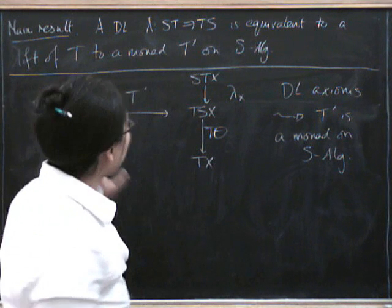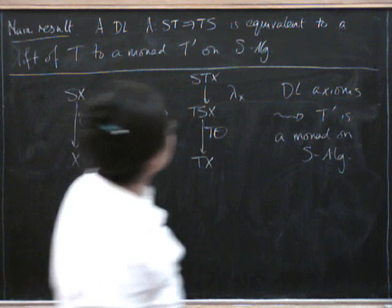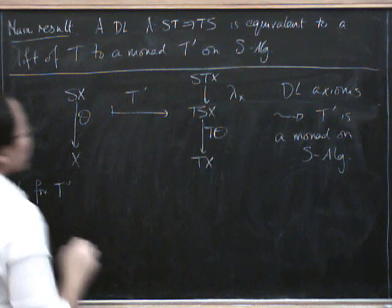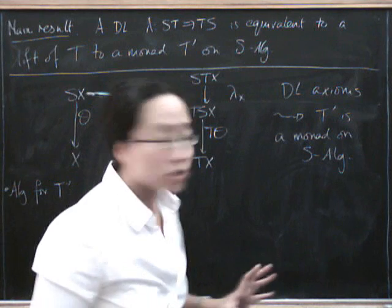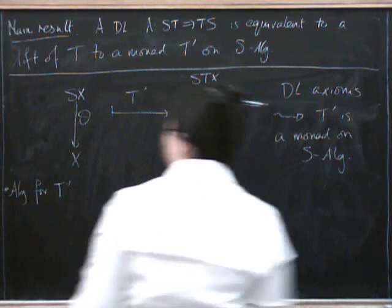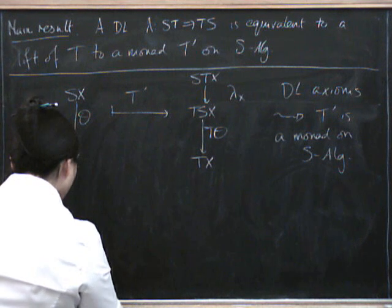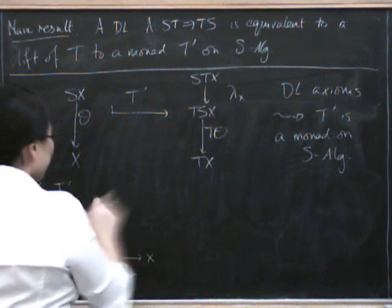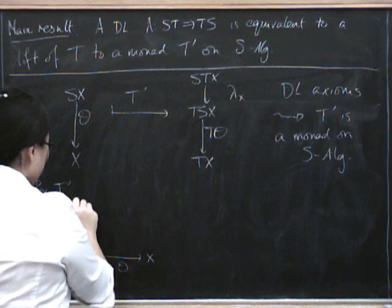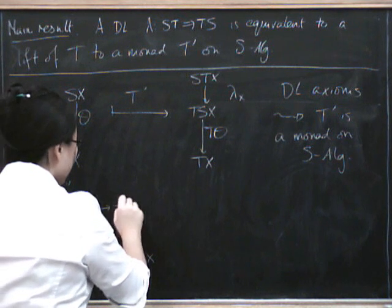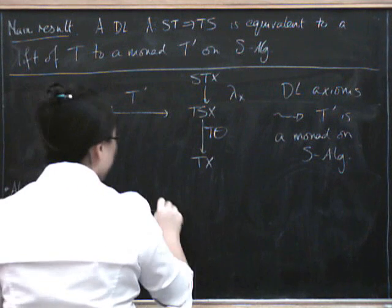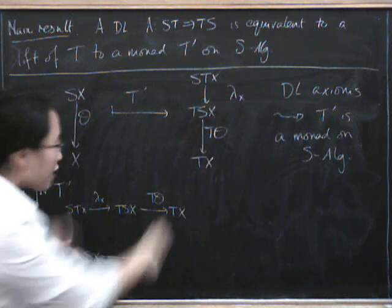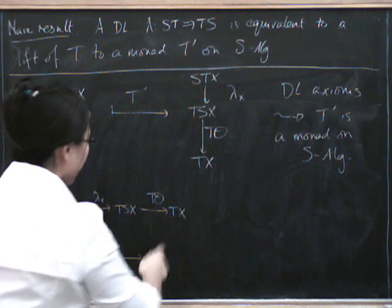Now what about this business of the algebras for T-prime being the same as the algebras for T∘S? So what's an algebra for T-prime? Well, the underlying object here is going to be an S-algebra, because T-prime is a monad on S-algebras. So here's an underlying S-algebra for us, S∘X going to X, right? And here's our T-prime of it, which goes from S∘T∘X to T∘S∘X via lambda X, then we go via T∘theta to T of X. Right, so now we need an algebra action.